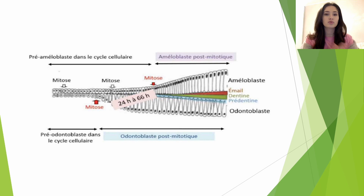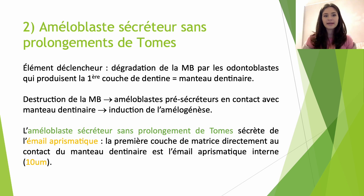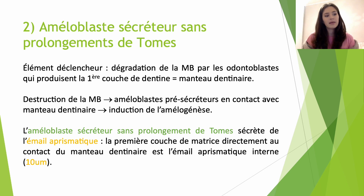Dès la sortie du pré-améloblaste du cycle mitotique, on a un améloblaste présécréteur. Il va se transformer en améloblaste sécréteur sans prolongement de Tome. L'élément déclencheur, c'est la dégradation de la membrane basale par des odontoblastes qui vont produire la première couche de dentine, le manteau dentinaire. La destruction de la membrane basale va permettre aux améloblastes présécréteurs d'entrer en contact avec le manteau dentinaire, ce qui va induire l'amélogénèse. L'améloblaste sécréteur sans prolongement de Tome sera responsable de la sécrétion d'émail aprismatique interne d'une épaisseur d'environ 10 micromètres.